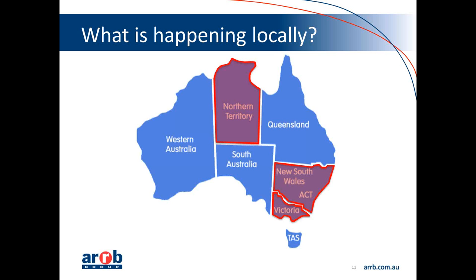A question has come through: there seem to be many supplementary guides — why haven't all the states adopted the Austroads guides so this can be streamlined across Australia? That is a very good question, and one for anyone who has tried to harmonise practice across Australia and New Zealand. It really comes down to different jurisdictions having different community expectations, different political imperatives, and slightly different technical histories. Austroads is working hard and jurisdictions are recognising the value in harmonisation. Whether we achieve 100% the same is another wait and see.